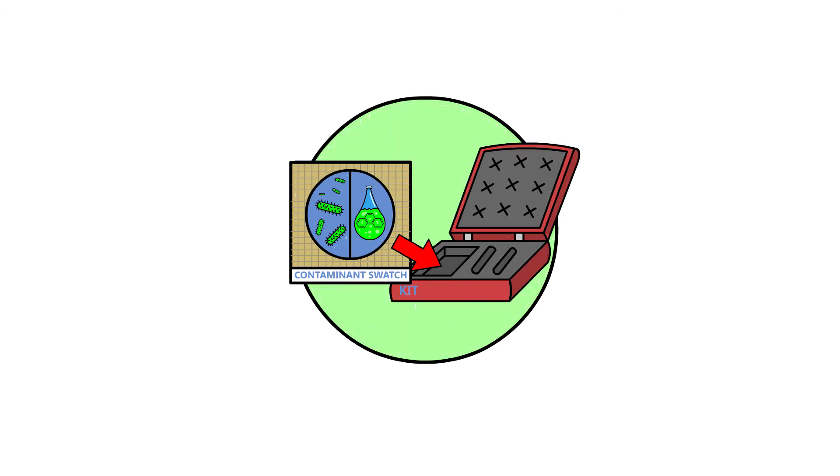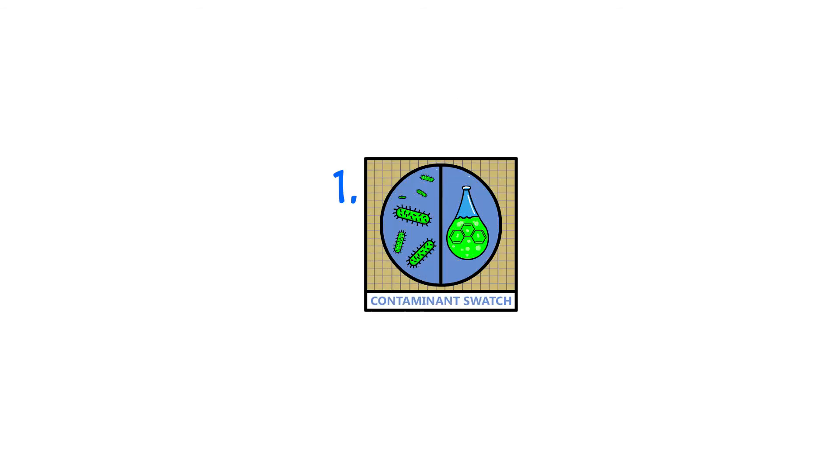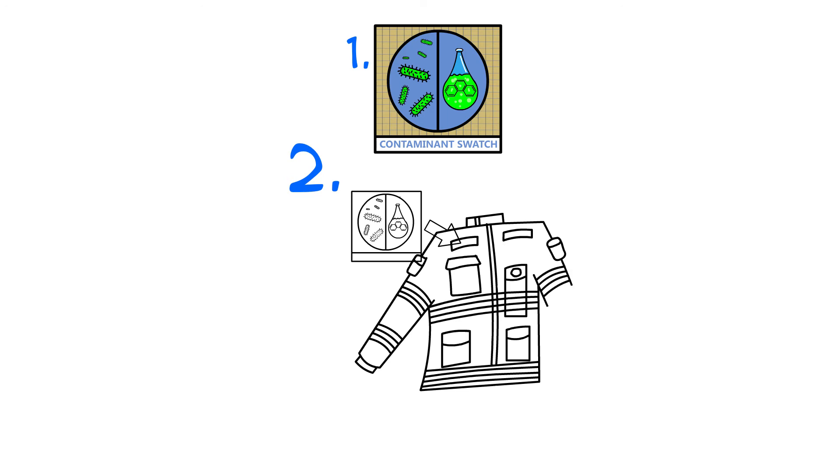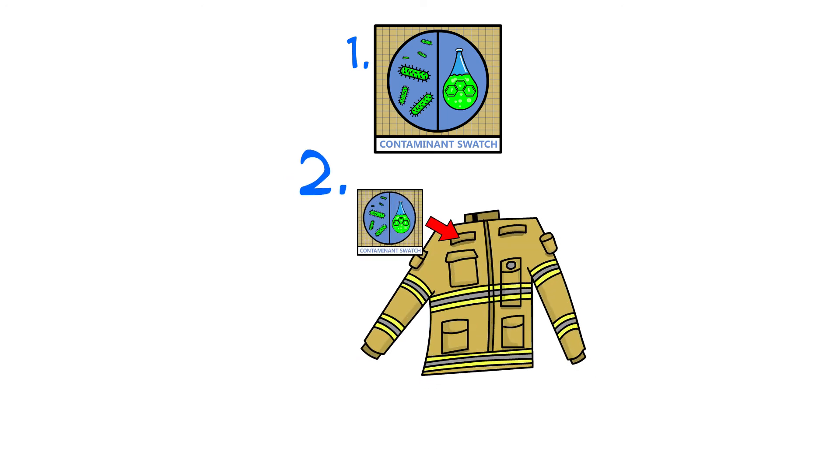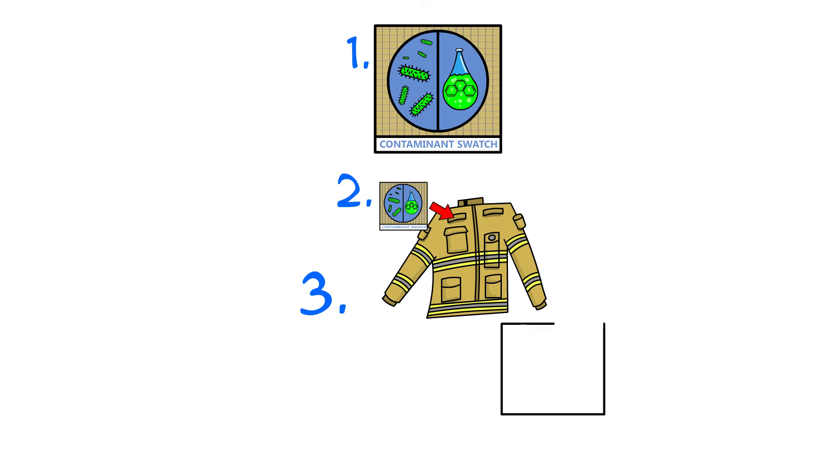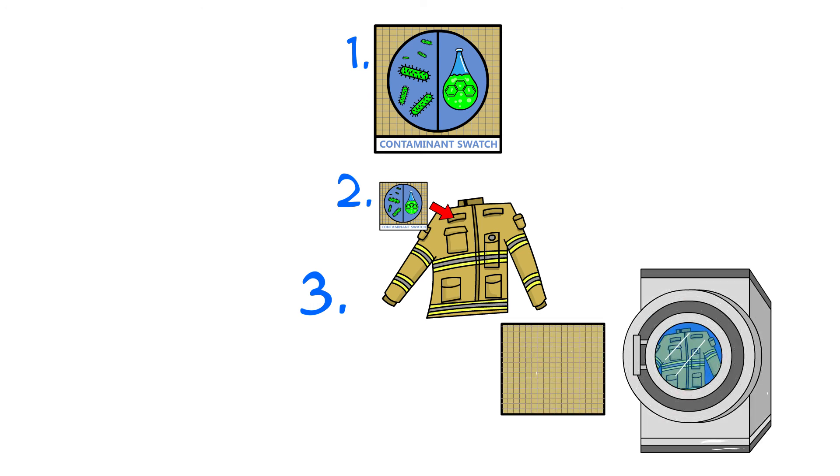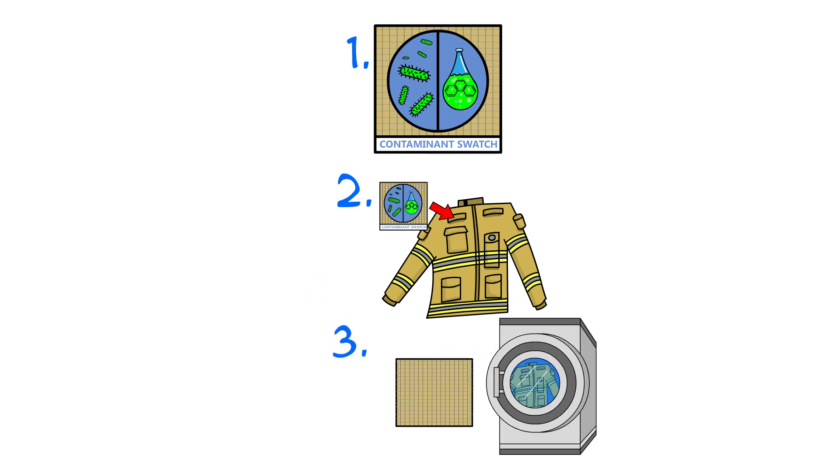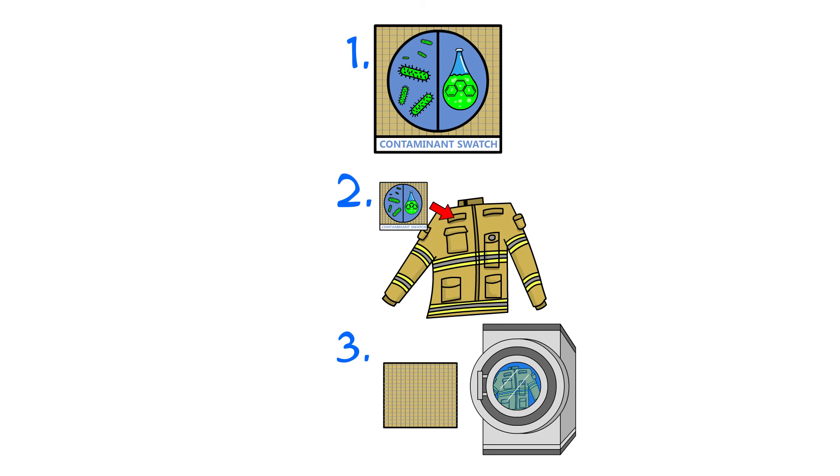Each cleaning validation kit will contain: one, standardized contaminated sample materials contaminated to the same levels; two, standardized surrogate clothing with the same pockets to hold the contaminated samples; and three, uniform ballast materials needed to make a complete laundry load so that the only variable is the cleaning process and detergent.